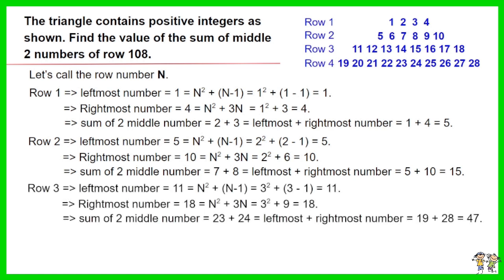Using the same approach, we are able to derive the leftmost, rightmost value, and sum of the two middle numbers of row 3.